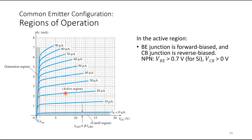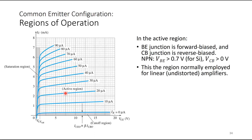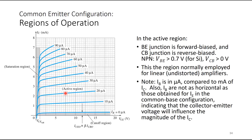In the active region, the base-emitter junction is forward biased and the collector-base junction is reverse biased. For NPN, once it turns on, VBE is 0.7 volts as it behaves like a silicon PN junction. To make the collector-base junction reverse biased, VCB has to be greater than 0 volts. This region is normally employed for linear or undistorted amplifiers. Also note that IB is in microamps — small compared to IC which is in milliamps — so the input current is small and the output current is large.